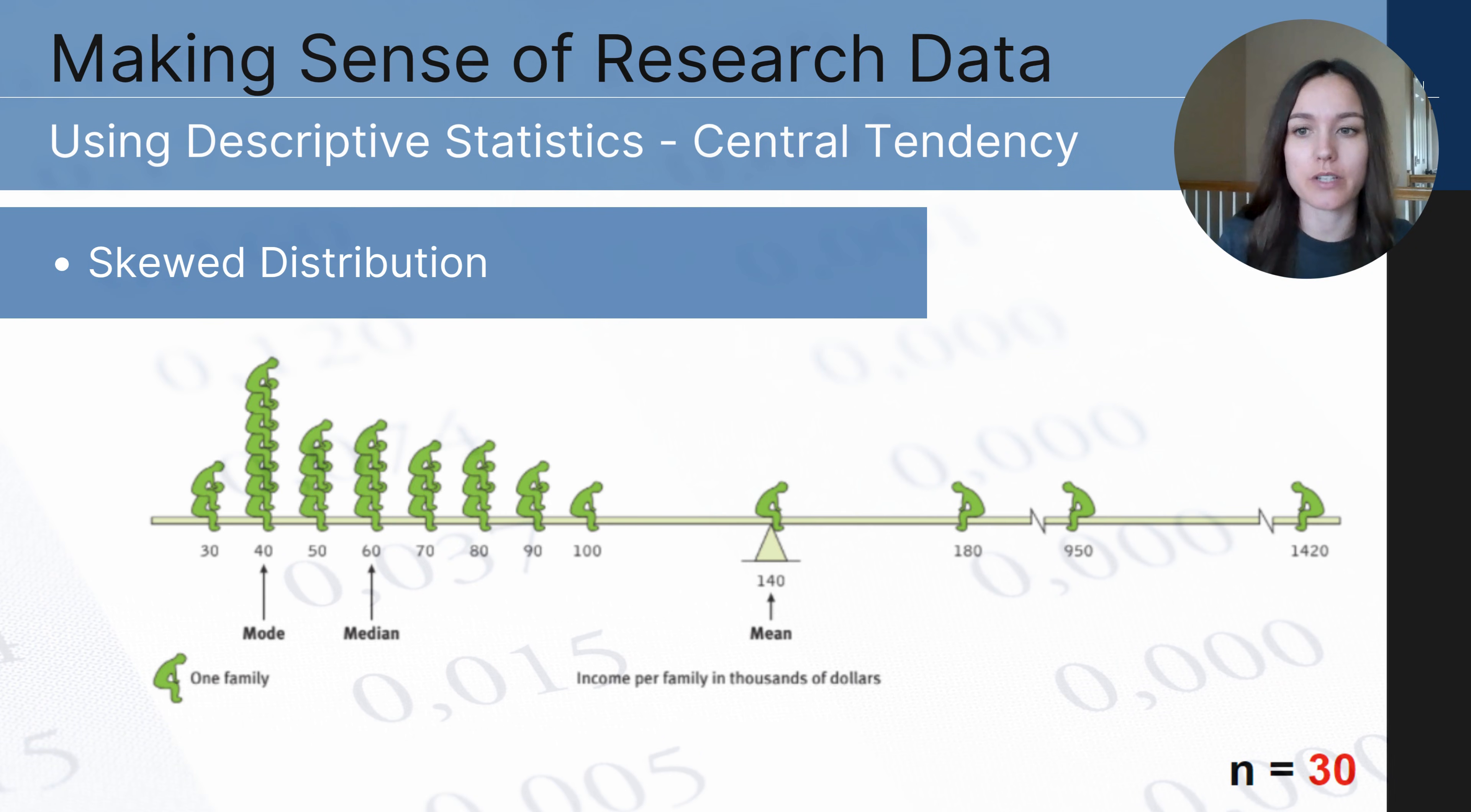So what we just looked at was a normal curve, but data doesn't always look like that especially if you have outliers who score differently than the majority of the participants and this is a really great example of that. In this diagram you can see that it represents family incomes in a particular city.